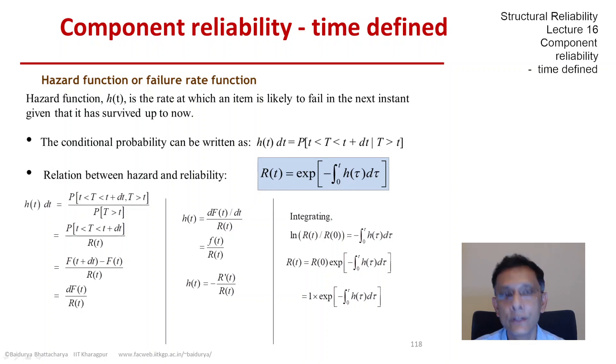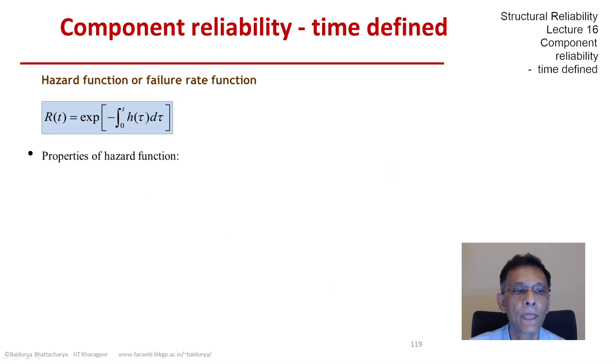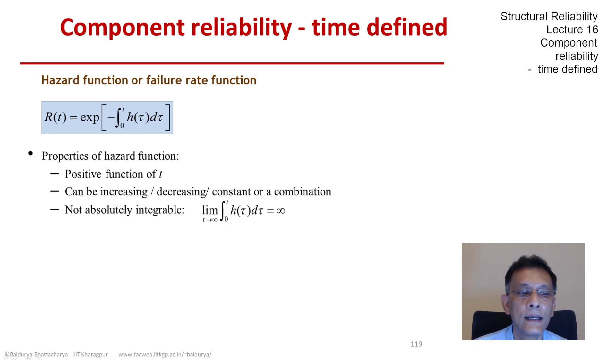Let's look at the properties of the hazard function. It's the ratio of two positive functions, so it's itself positive for all t. It could be decreasing, increasing, constant, or a combination - it doesn't have to be monotonic. But a very important property is that its integral between 0 and infinity must blow up - the integral cannot be a finite number. That's an essential property for a function to qualify as a hazard function.